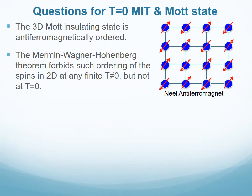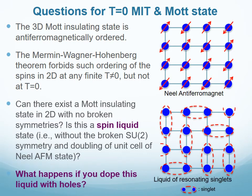Even the magnetic ordering of the Mott insulating state in 2D needs careful consideration. While nearest-neighbor spins are antiferromagnetically correlated, the Mermin-Wagner-Hohenberg theorem allows true antiferromagnetic order in a 2D system only at zero temperature. Further, can the zero-temperature Mott state in 2D be one with no broken symmetries? By this, we are looking for a liquid-like state of spins which could, for instance, look like a system of resonating short-range singlets.